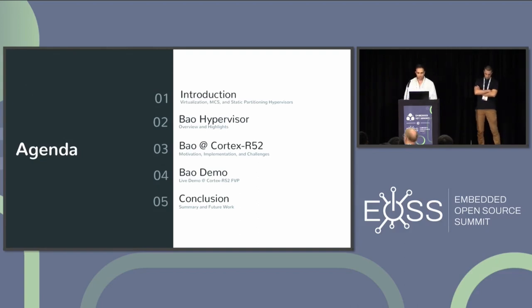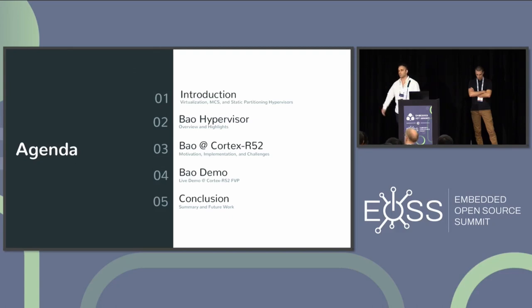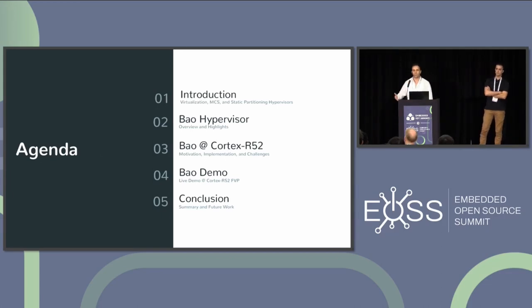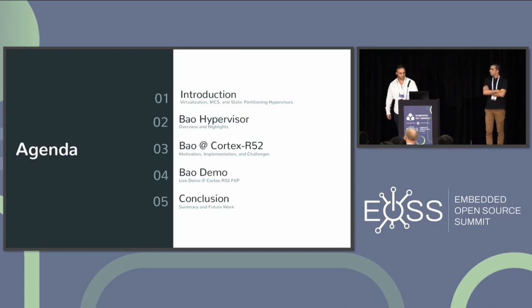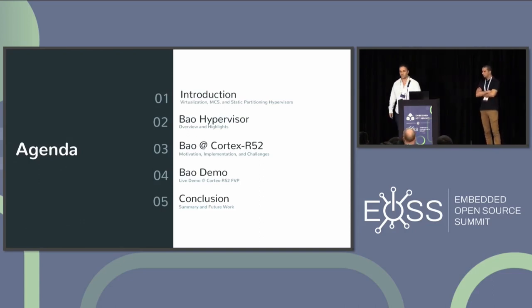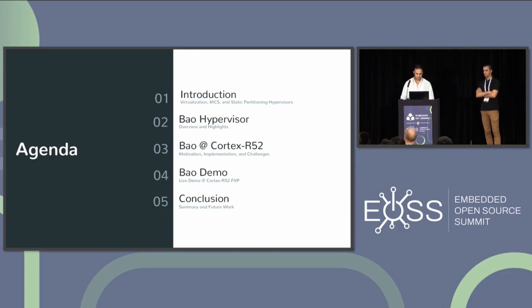Then I will briefly present the BAU hypervisor — an overview and some highlights. Then I will hand over to Jose, which will explain the motivation, implementation and challenges of BAU on this particular novel architecture from ARM, which is the Cortex-R52. Then we will perform a live demo, and then touch on takeaways and future work.